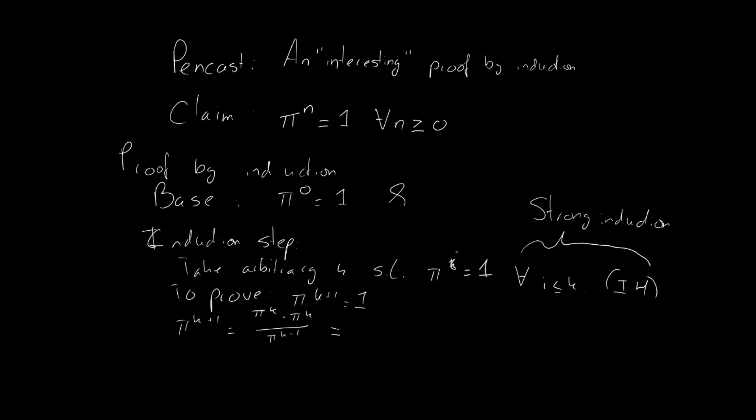Because for π to the power k as well as for π to the power k minus 1, we know that our strong induction hypothesis must hold. So this, according to our induction hypothesis, is equal to 1 times 1 over 1. But that's just 1.